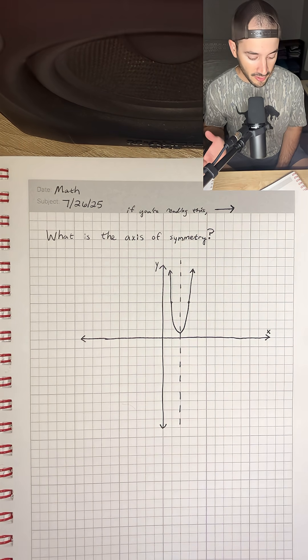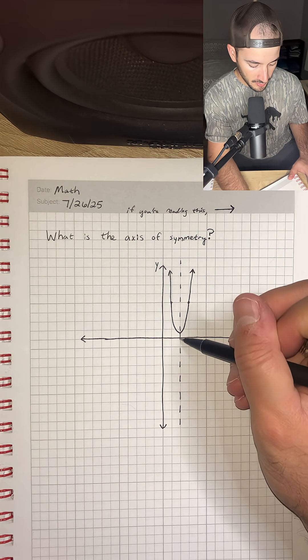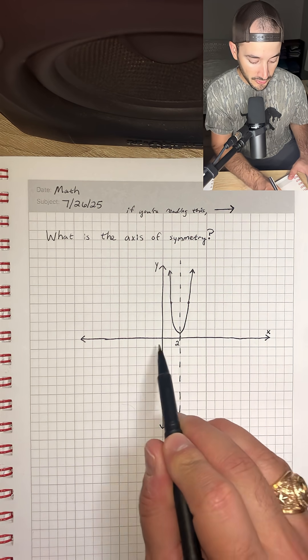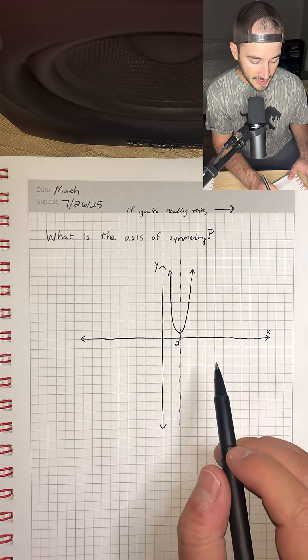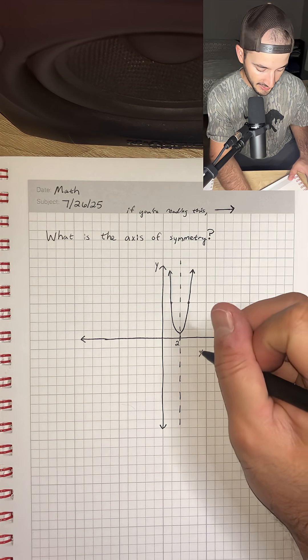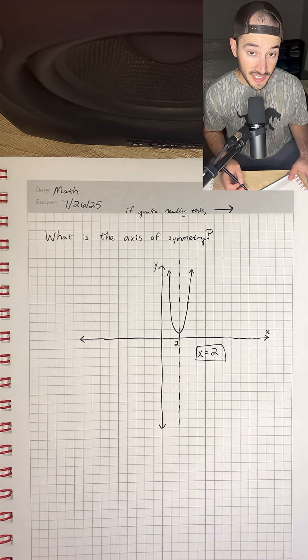Now the way that we write our axis of symmetry is we look at the x value, which in this case is 1, 2, so that's positive 2, and because that's positive 2 on the x-axis, that means that our equation for our axis of symmetry would be x equals positive 2, and that would be the answer to the question.